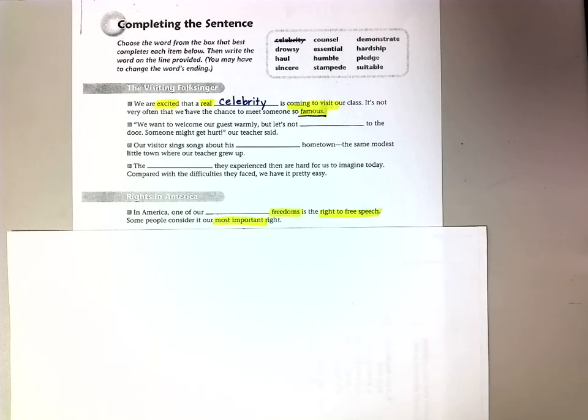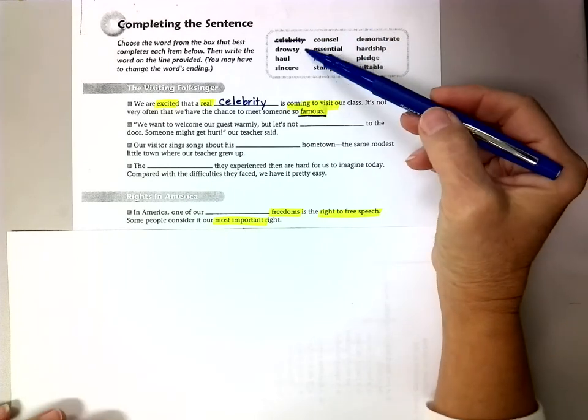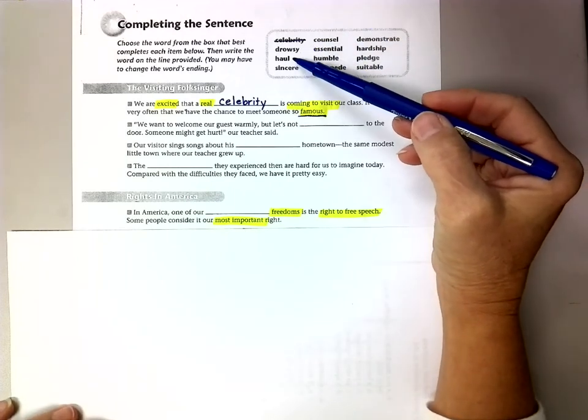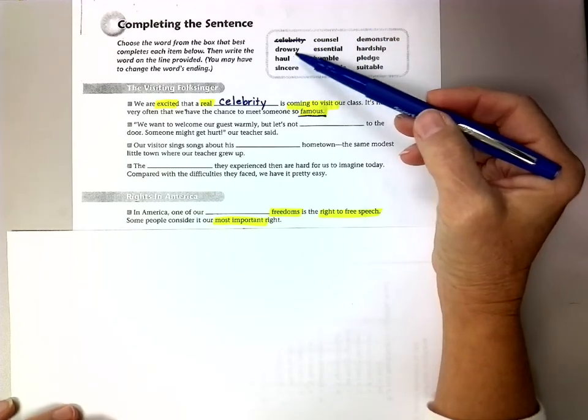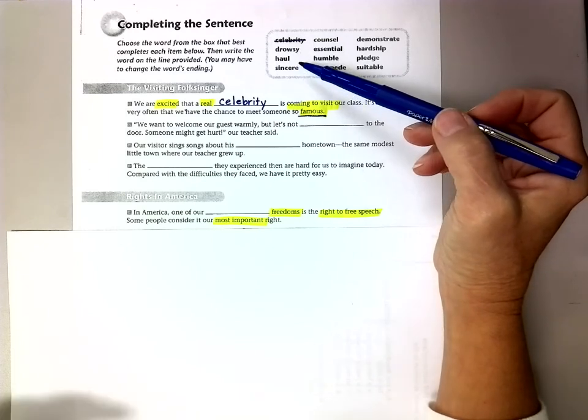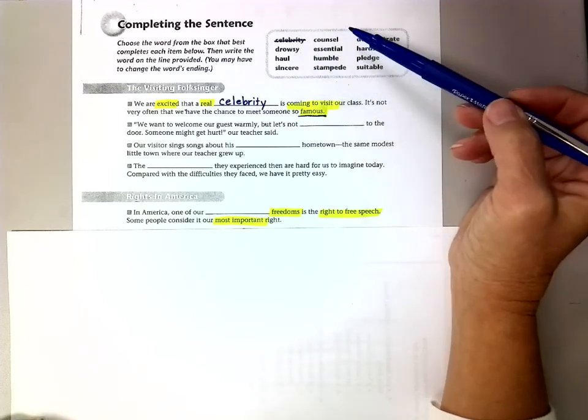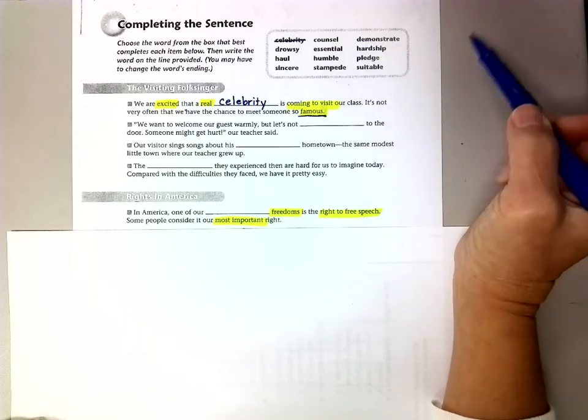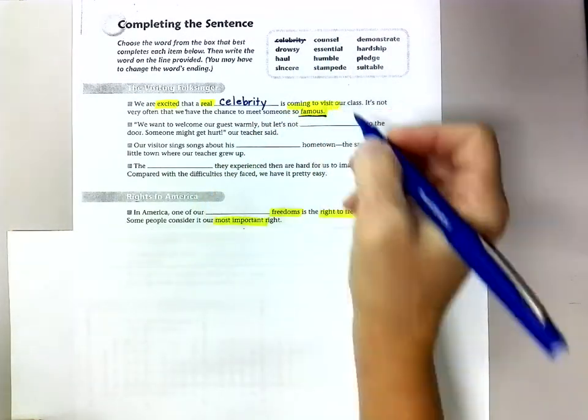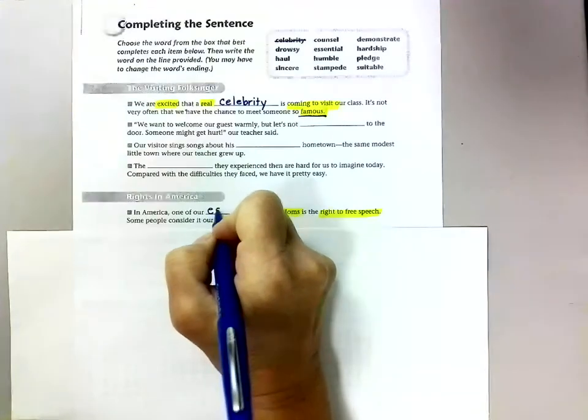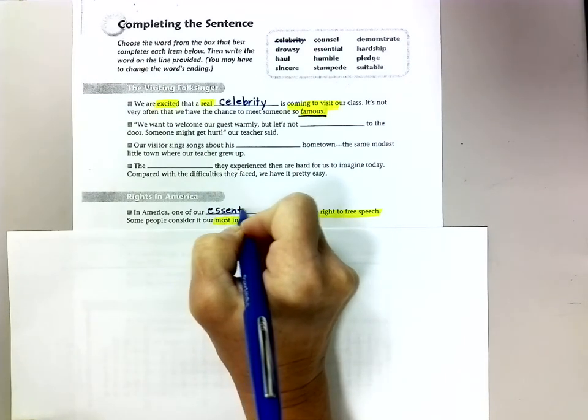So in America, one of our most important freedoms is the right to speech. That kind of makes sense. So I'm going to look up here and find the word that means the most important. And as I look through here, I know it's not drowsy. That means kind of tired. Haul means to carry something away. Sincere means I have a deep feeling for it. And when I come down here, I see the word essential. So I'm going to write that word right there. Essential.